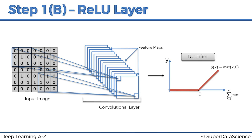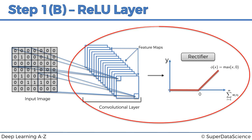You're already familiar with the rectifier function from the previous section on artificial neural networks. Sometimes authors or instructors separate the convolution and the rectifier as two separate steps, but in our examples we're going to consider them one big step — first the convolution, then the rectifier. We apply the rectifier because we want to increase non-linearity in our convolutional neural network.